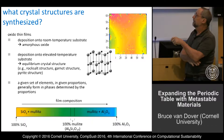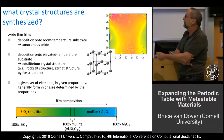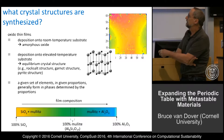We're typically depositing at room temperature and then we might do an anneal. The idea is that the atoms eventually form a crystal structure. An example is rock salt. You might have heard of garnet structure, pyrite structure — they're all different arrangements of the same atoms, just in different symmetry and different organization.